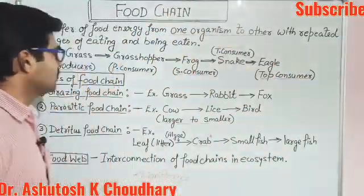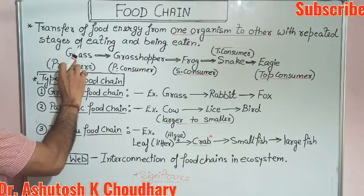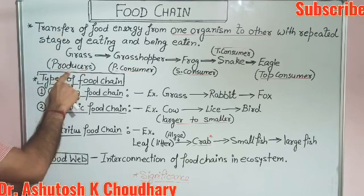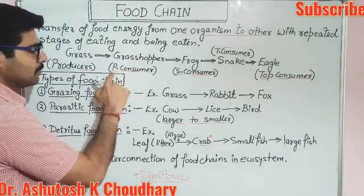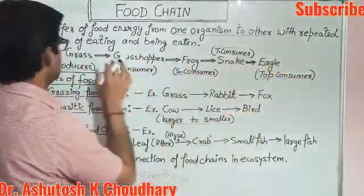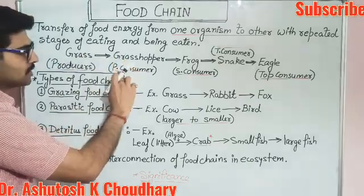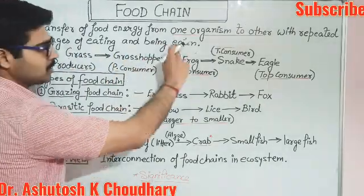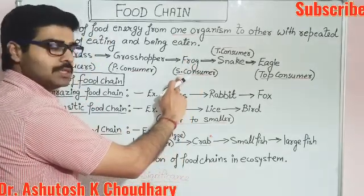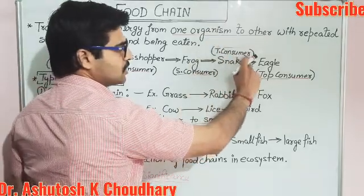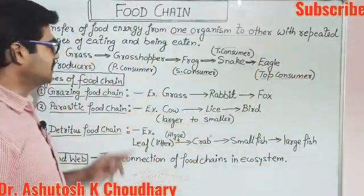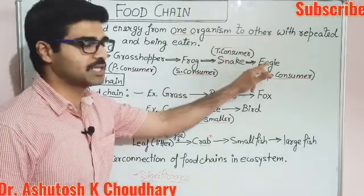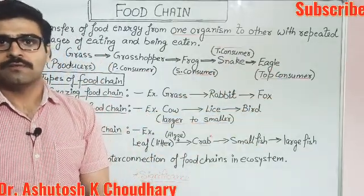Now remember some important points. Here, grass is the producer as per the component of the structure of the ecosystem. Next to the producer is the primary consumer, then the secondary consumer, then the tertiary consumer, and at the last level is the top consumer. These different levels in the food chain are known as trophic levels.